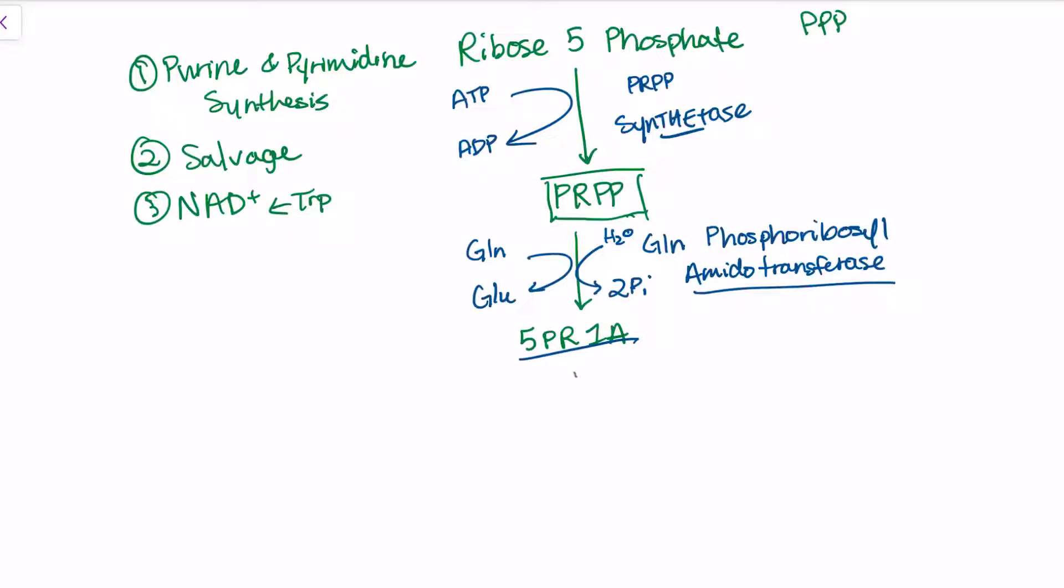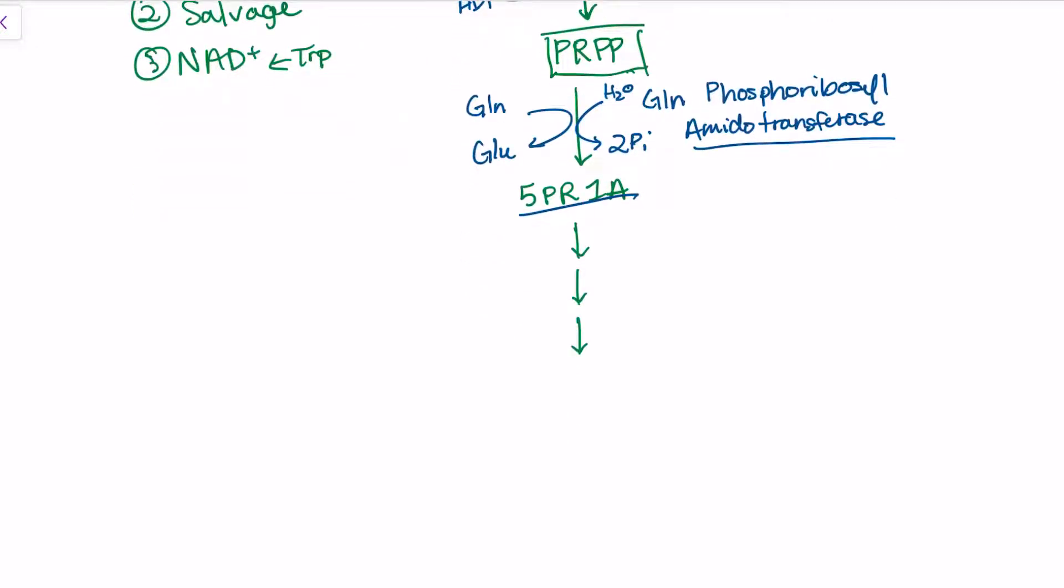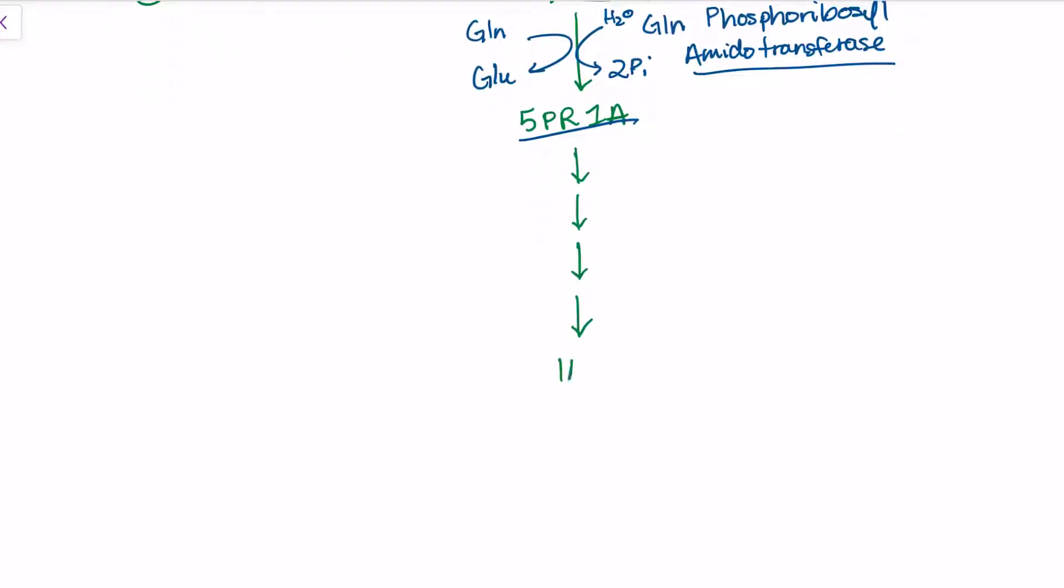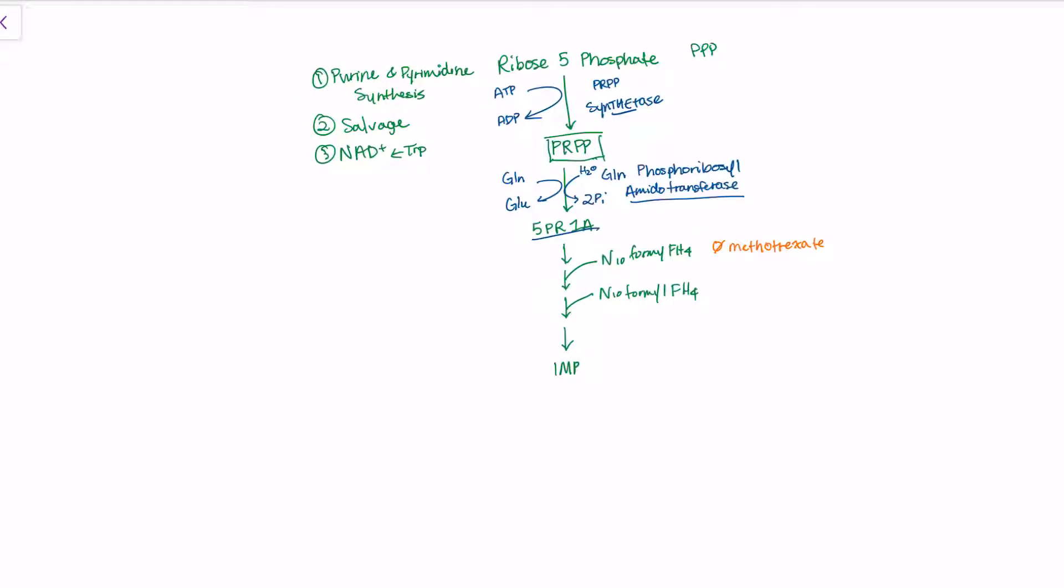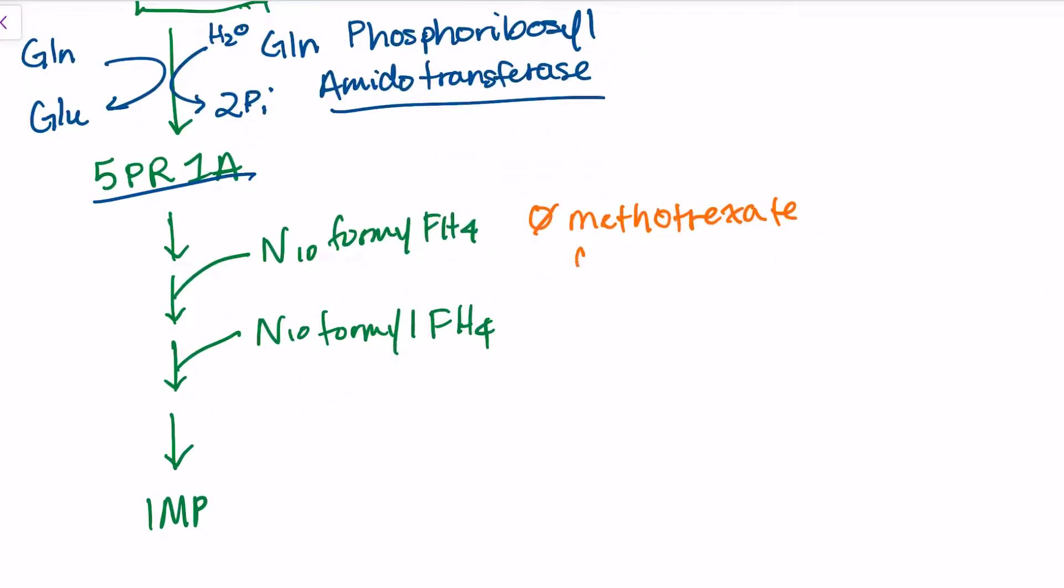From 5-phosphoribosyl-1-amine, we have a series of steps you don't need to know details about because they don't have clinical correlation. Eventually we get to IMP. In two of these steps, we need N10-formyl FH4, N10-formyl tetrahydrofolate. The synthesis of this compound is inhibited by methotrexate. Anytime we inhibit synthesis of purines or pyrimidines, we inhibit DNA synthesis, so methotrexate makes a good chemotherapy agent.